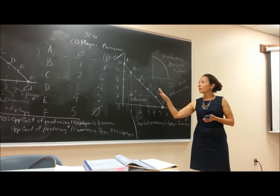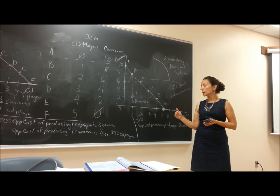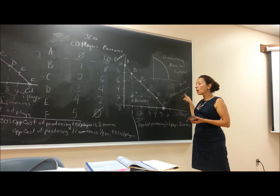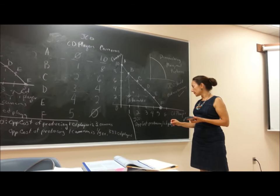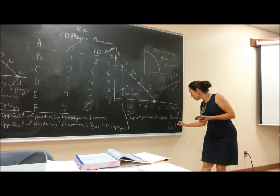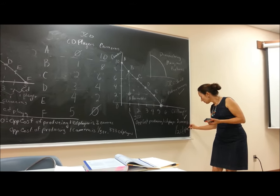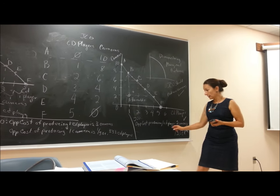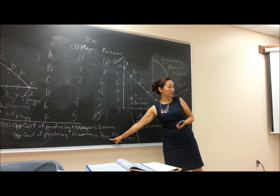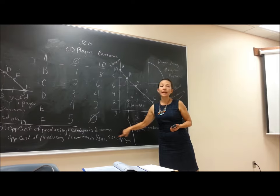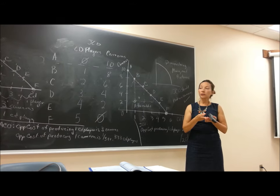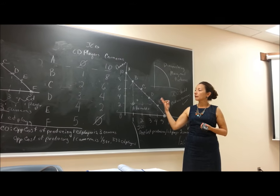So which of these two companies should focus on cameras, and which on CD players? JCO should focus on cameras because it costs them half a CD player to produce a camera, while ACO's cost is only one-third. ACO should focus on CD player production. This becomes the rationale for engaging in international trade or outsourcing components.